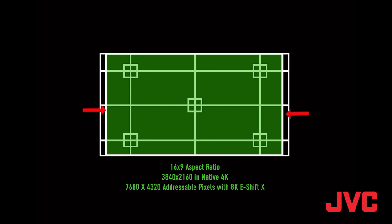You get all those pixels, you get 3840x2160 in native resolution in the green area, or if you're using E-Shift, it'll give you 7680x4320, and E-Shift X will give you all those pixels addressable as well.